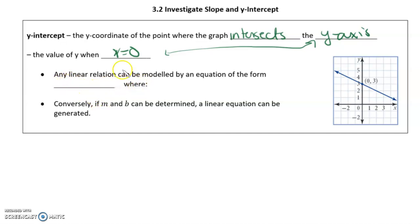Any linear relation can be modeled by an equation of the form y equals mx plus b, where m is the slope and b is the y-intercept. Conversely, if m and b can be determined, a linear equation can be generated.